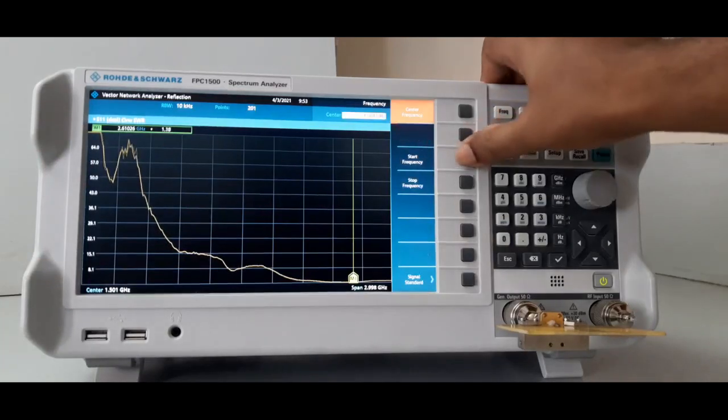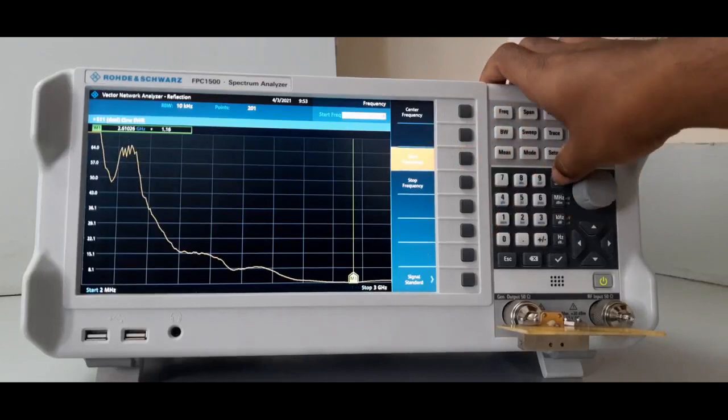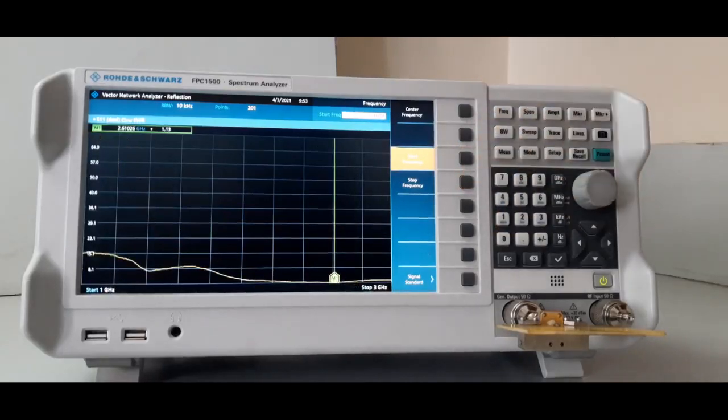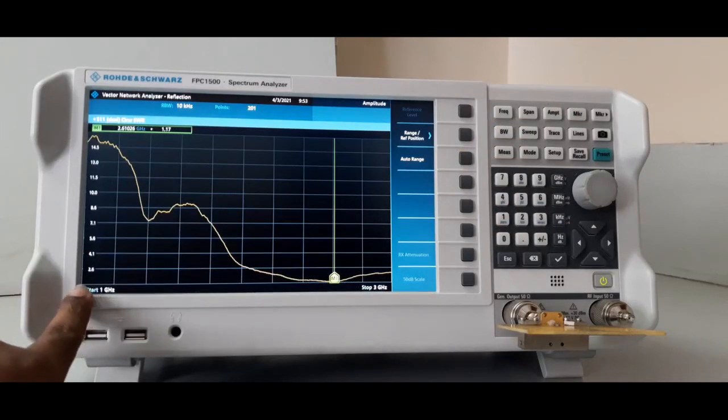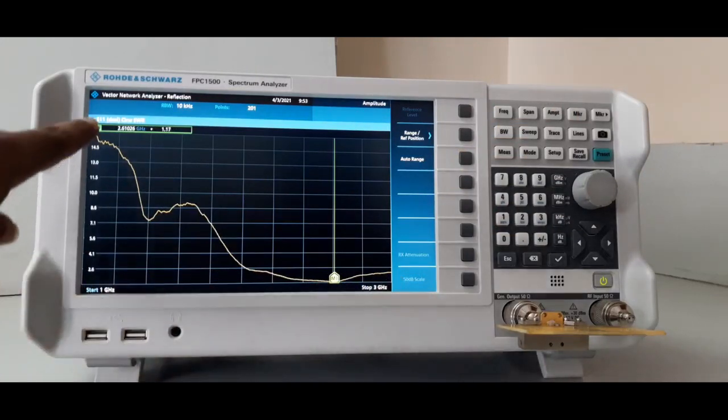I will give frequency start 1 gigahertz, stop 3 gigahertz. So 1 gigahertz up to 3 gigahertz. 1 gigahertz it is 14.5 VSWR is.